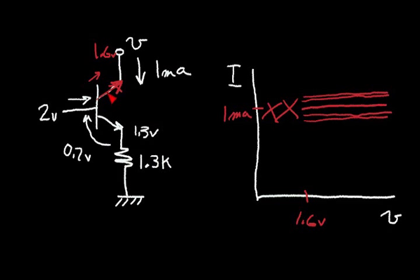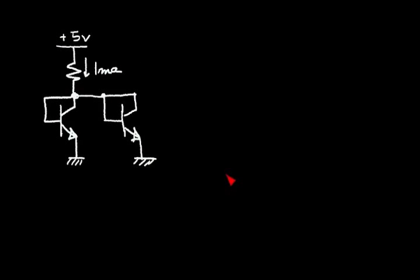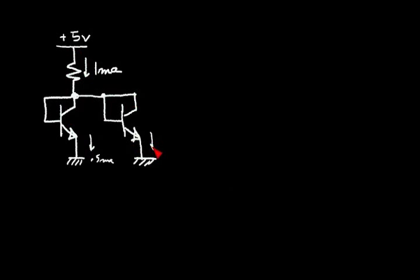Let's consider some other ways to implement this current source in bipolar technology. Here I have two identical NPN transistors where the base and collector nodes are connected together, and a resistor connected to plus 5 volts that supplies 1 milliamp to these transistors. The key thing is that these transistors are identical, so they have equal amounts of current — 0.5 milliamps each in the emitter.